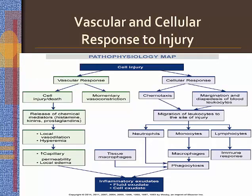Monocytes are the second type of phagocytic cells to migrate to the site of injury from circulating blood. They are attracted to the site by chemotactic factors and arrive within 3 to 7 days after the onset of inflammation. When monocytes enter tissue spaces, they transform into macrophages. They assist in phagocytosis of inflammatory debris, have a long lifespan, and can multiply. A macrophage is important in cleaning the area before healing can occur and could stay in damaged tissue for weeks.